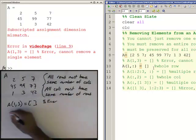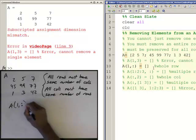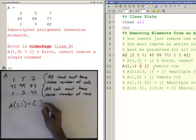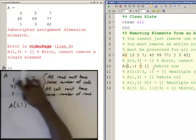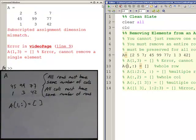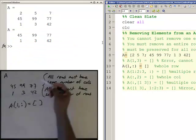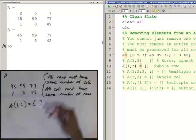And let's do some code here, erase that one because that gives an error, and let's say A(1,:) equals the empty vector. Now what I've done is I've said the first row, all columns equal the empty vector. So basically the first row, all columns, they're going to get assigned the empty vector and they're going to go away. So when I run this you see I'm left with the array 45 99 77; 1 3 and 42.